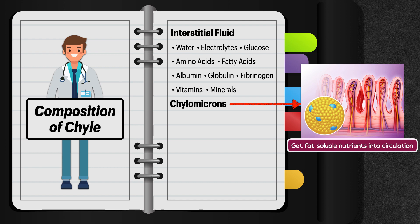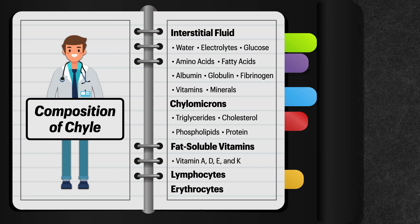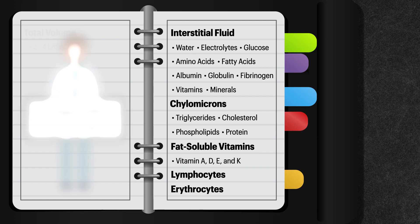When it comes to chylomicrons, they're formed in the intestinal cells as a way to get fat-soluble nutrients into circulation, and they're composed of triglycerides, cholesterol, phospholipids, and protein. Add in fat-soluble vitamins obtained from the diet, lymphocytes, and a small number of erythrocytes, and that completes the general makeup. Reports of the total volume of chyle that passes through the thoracic duct are anywhere from 2 to 4 liters per day.